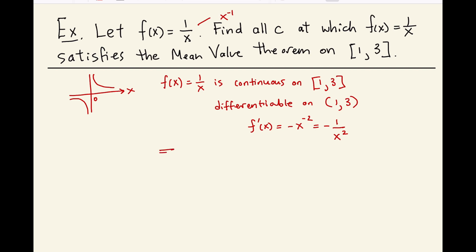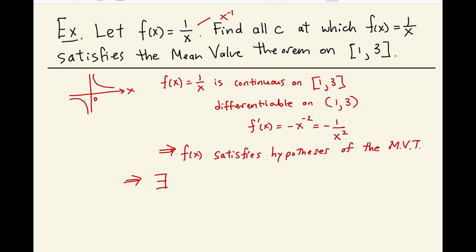This implies that f(x) satisfies the hypotheses of the mean value theorem. What that tells us is that there must exist some number c in the open interval (1, 3) such that f prime of c is equal to f(3) minus f(1) over 3 minus 1. So the mean value theorem guarantees that this c must exist.